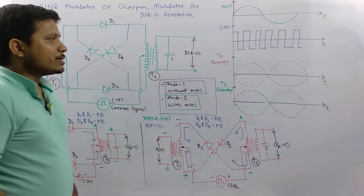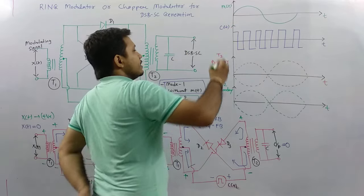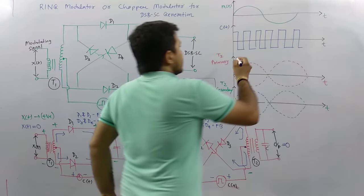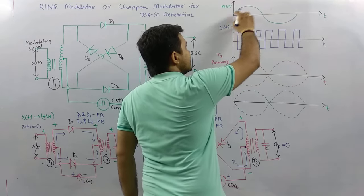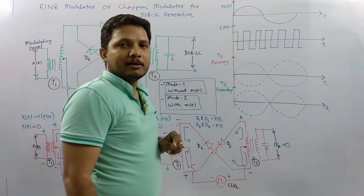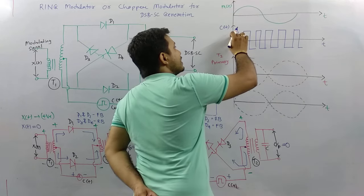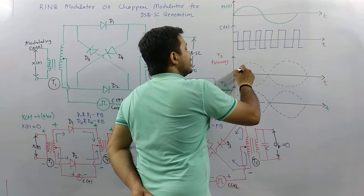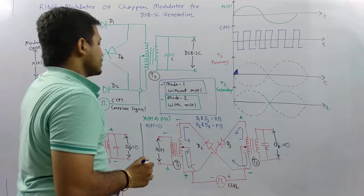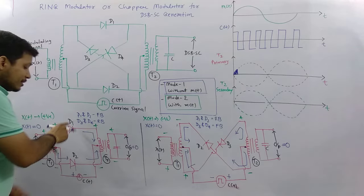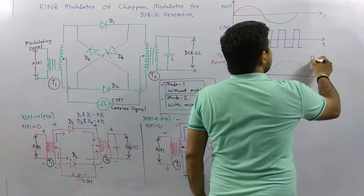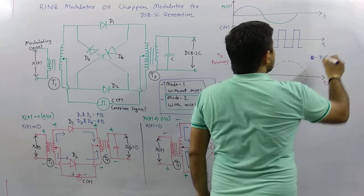Let us understand this by waveforms. The modulating signal is a low frequency signal and the carrier signal is a high frequency signal. When the modulating signal is positive and the carrier signal is positive, the output will be positive, shown here by dark color — in that case D1 and D2 get triggered.